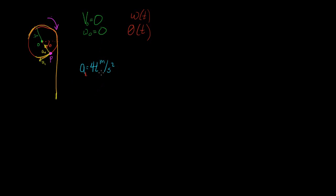So how do we go about this problem? Well, we know that we have an alternate expression for tangential acceleration. If we call this our positive direction, we have our tangential acceleration equal to our angular acceleration times R, where R is the distance from the fixed axis to the point — the disk rotates around point O, so this radius is 0.2. We don't know our angular acceleration, but we do know our tangential acceleration, and that's 4t.